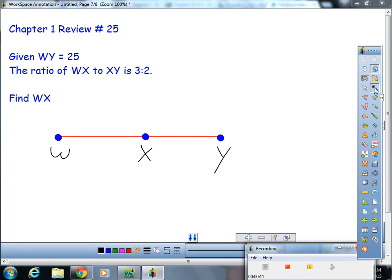We don't know what WX is, but we know that the ratio is 3 to 2. Anytime you see that, you're gonna have to get your algebra on, and we're gonna call this 3x and this 2x.